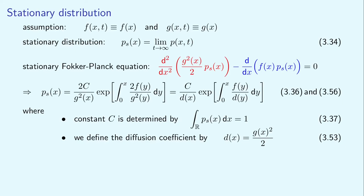Integrating the stationary Fokker-Planck equation, we obtain that p_s(x) is given by this formula, written here in two different ways. The first gives the stationary distribution in terms of the functions f and g appearing in the SDE, given as equation 3.36 in the lecture notes. In the second formulation, we introduce the diffusion coefficient, defined as g squared divided by 2. The diffusion coefficient stands in the Fokker-Planck equation in front of the second derivative. Both the noise strength g and the diffusion coefficient d give the same piece of information. In some applications, it is the diffusion coefficient which is more often given to describe stochastic fluctuations. Then the stationary distribution is given by equation 3.56 in the lecture notes.